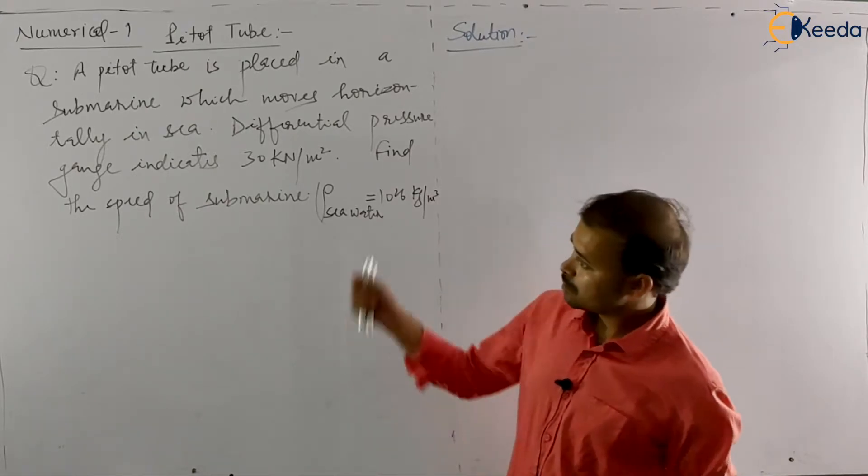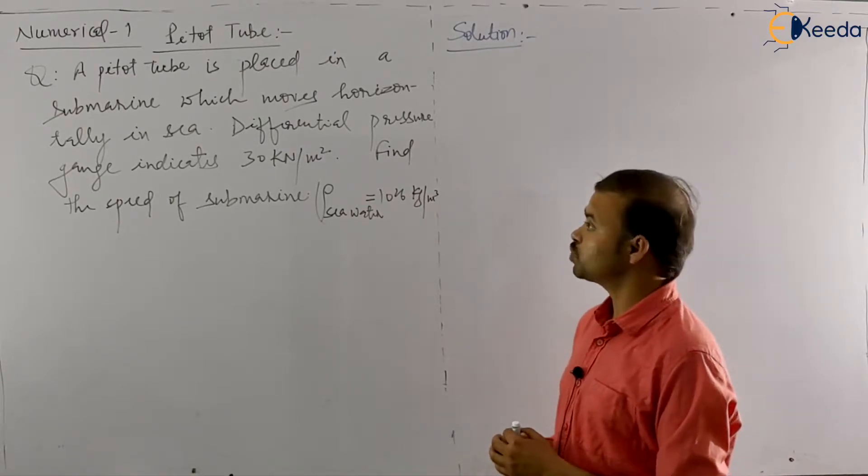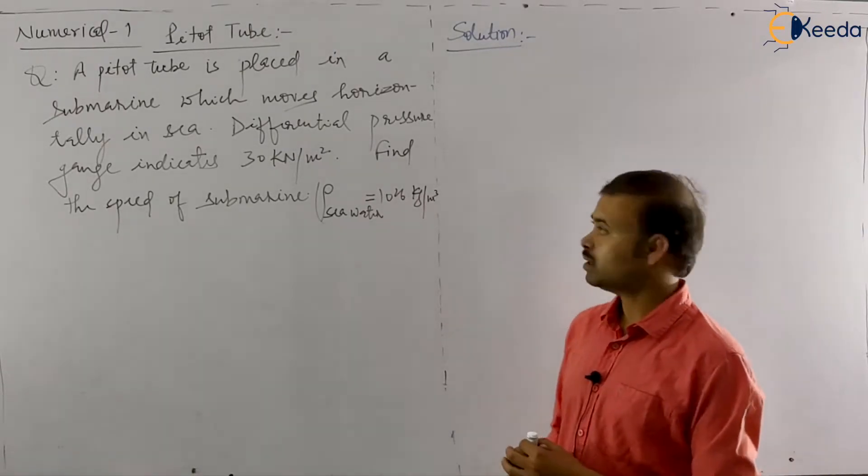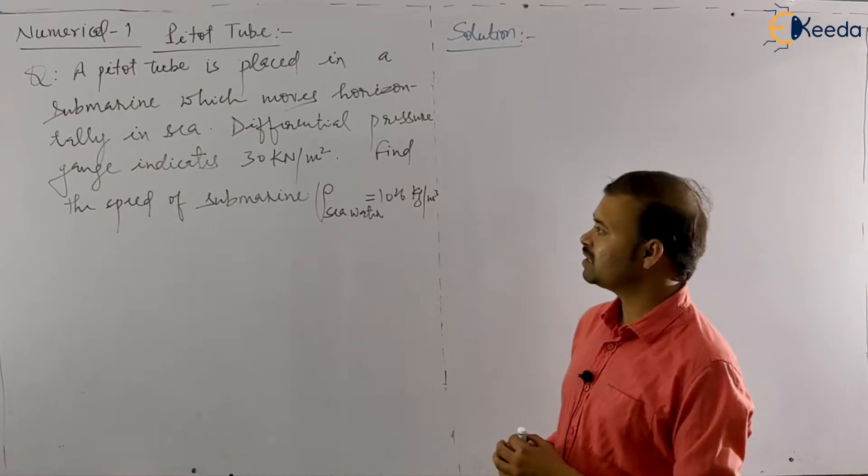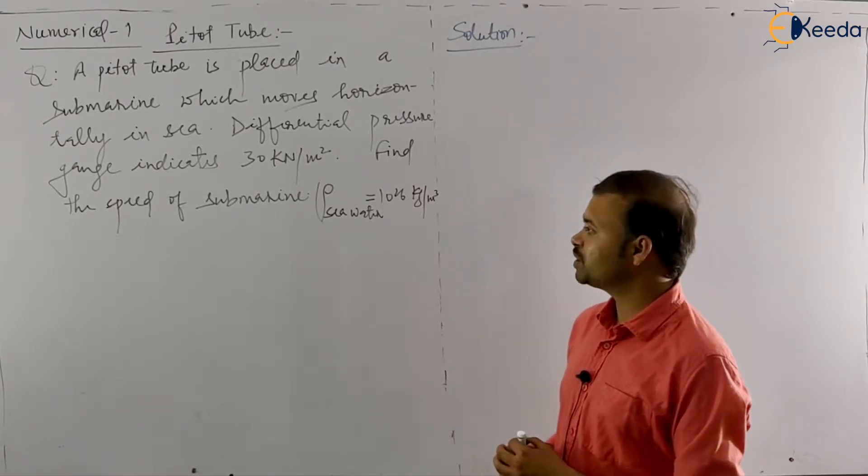So let us read out the question. A Pitot tube is placed in a submarine which moves horizontally in sea. Differential pressure gauge indicates 30 kN per meter square. Find the speed of the submarine.